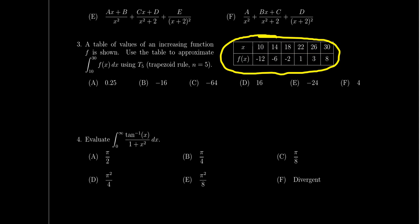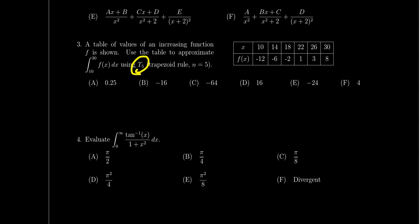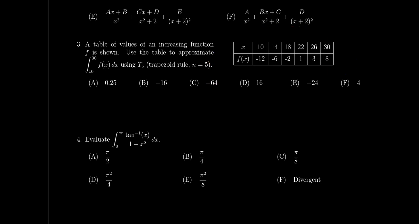For example, f(10) equals negative 12 and f(22) equals 1. Using this table, you'll be asked to approximate an integral — say integrating from 10 to 30 using five subdivisions, applying the trapezoidal rule T5 to estimate the area under the curve. Be aware that this question won't give you an algebraic function, so you cannot use the fundamental theorem of calculus. You only have enough information to approximate it using one of these numerical methods.